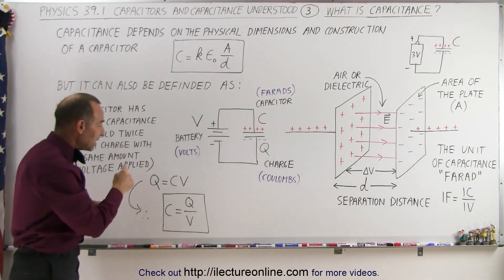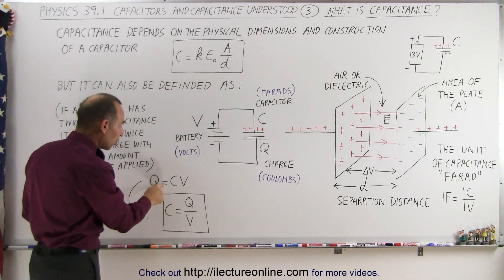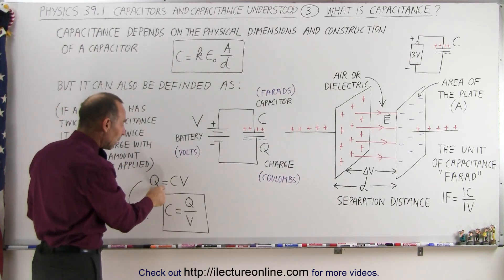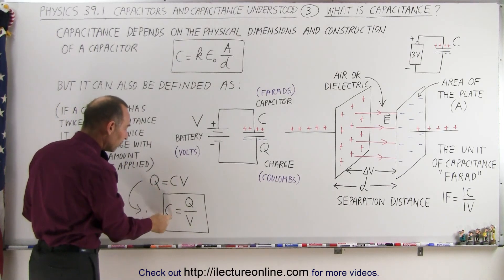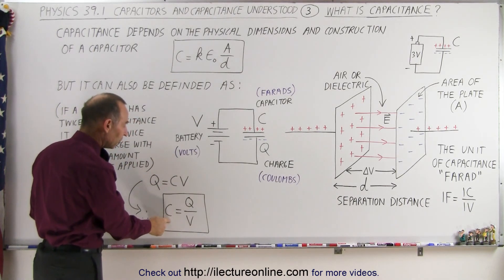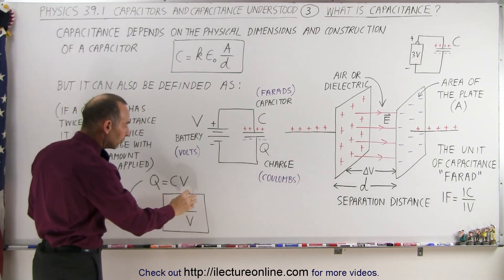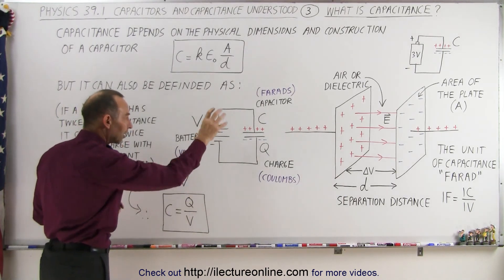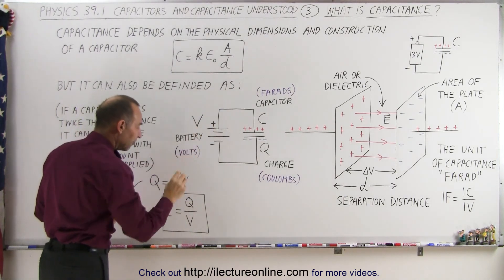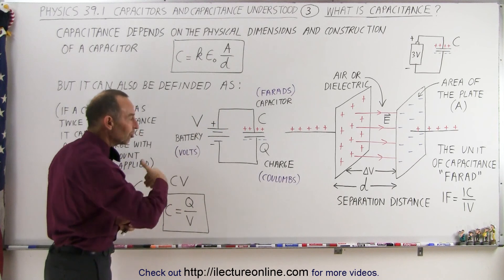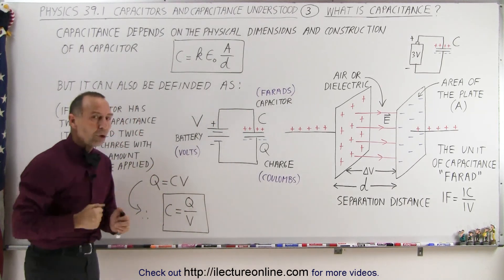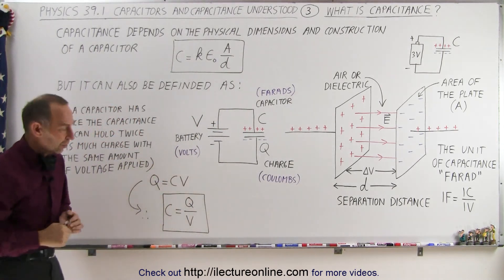If we take that equation and solve it for the capacitance of the capacitor, you can see that it's equal to the quotient of the charge on the capacitor divided by the voltage applied to the capacitor.